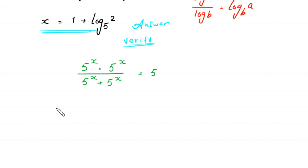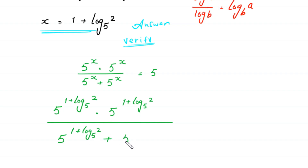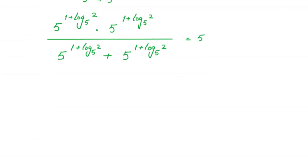The equation becomes 5 to the power (1 plus log base 5 of 2) times 5 to the power (1 plus log base 5 of 2), divided by 5 to the power (1 plus log base 5 of 2) plus 5 to the power (1 plus log base 5 of 2), equal to 5. According to the property a to the power m times a to the power n equals a to the power m plus n, we add the powers in the numerator.